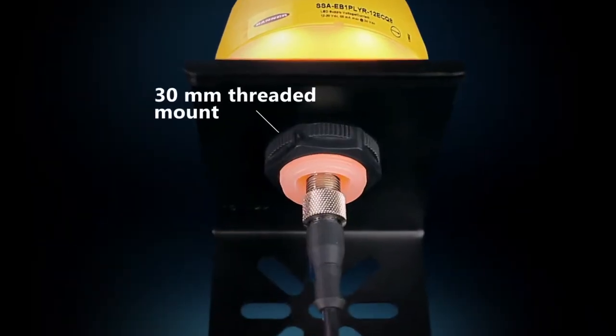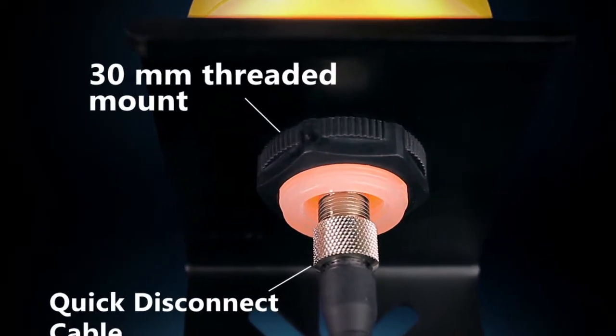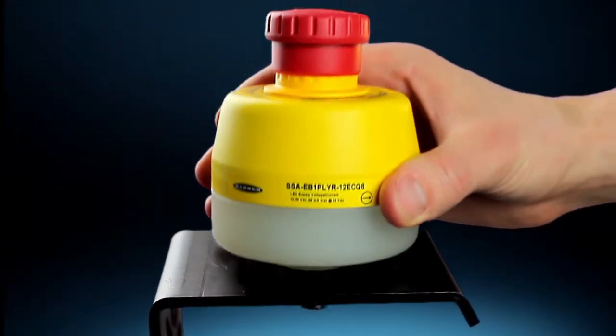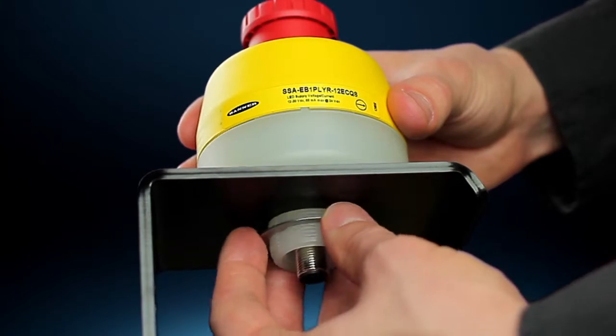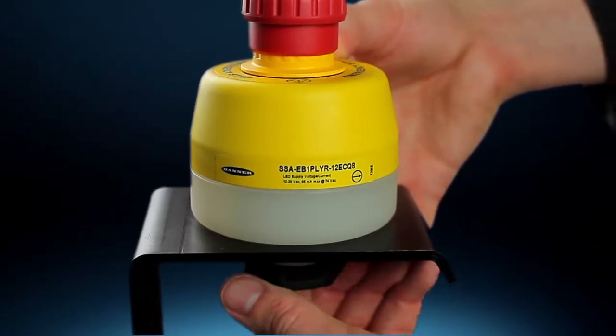The 30mm threaded mount enables a quick installation process. The robust all-in-one housing is ready to install out-of-the-box, eliminating labor-intensive assembly and wiring.